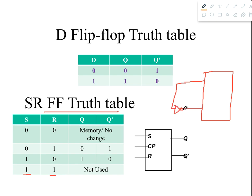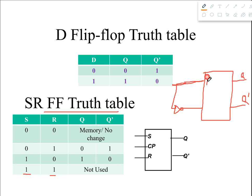What was done is that instead of keeping two separate inputs, one input is changed into the negative of the other input. So one input is just the complement of the other. The outputs remain the same — Q and Q prime — however R is basically the complement of S. So we change the naming: S and R get replaced by D and D prime.